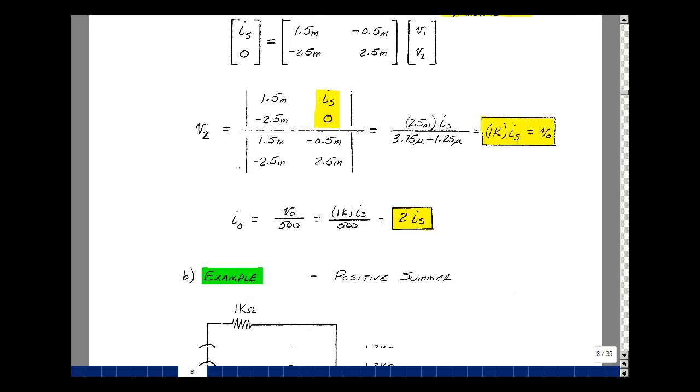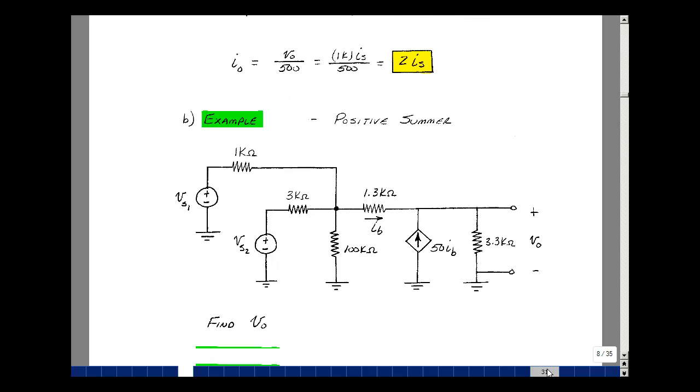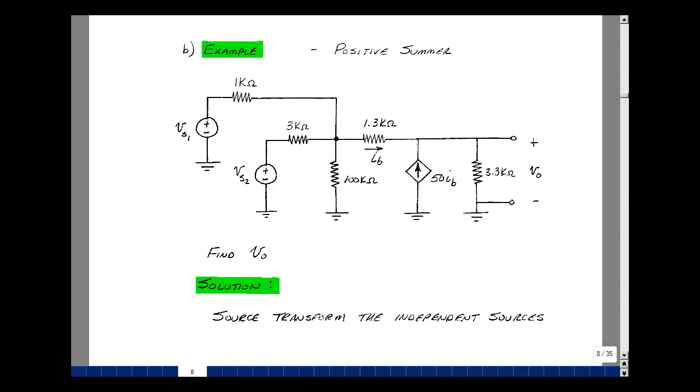I've got another example. This is called a positive summer. Here I've got two voltage sources and one current source and five resistances. Let's find the voltage Vout here. Now to use our inspection technique, we have to have all current sources. So we could do a source transformation on these two voltage sources, and we'd have a circuit that has just current sources in it, although one of them is dependent. And we could use our inspection algorithm to start the problem.